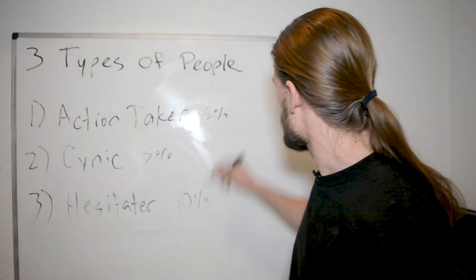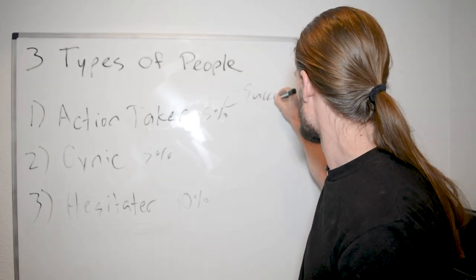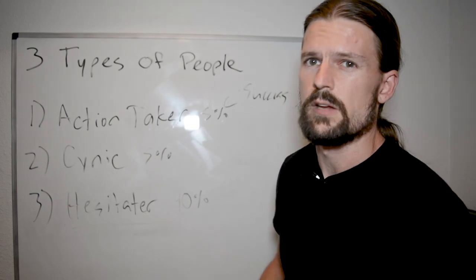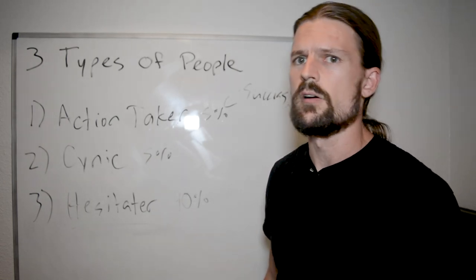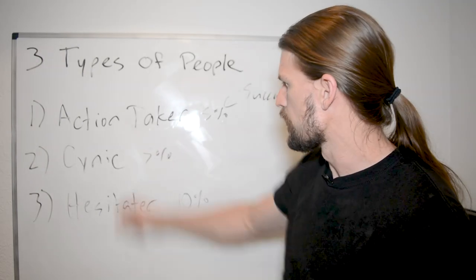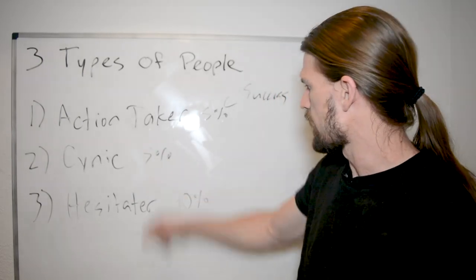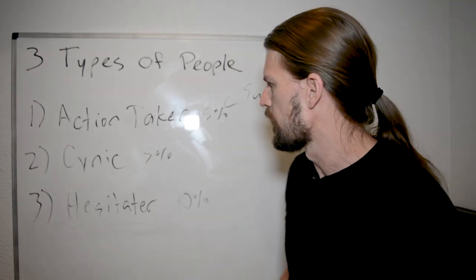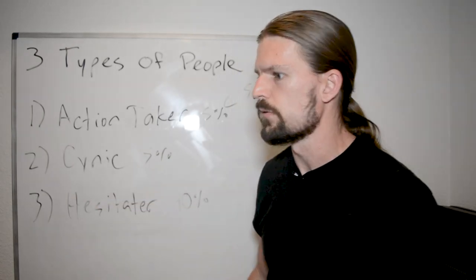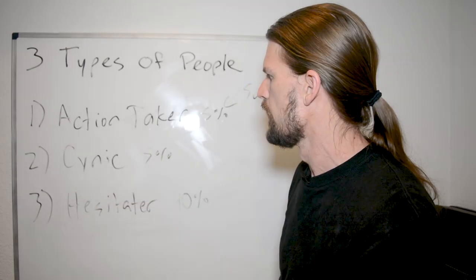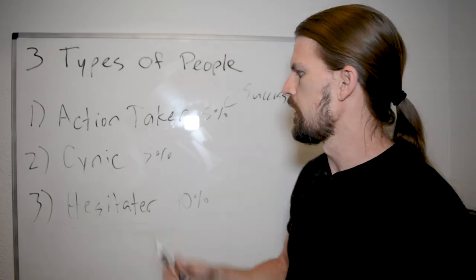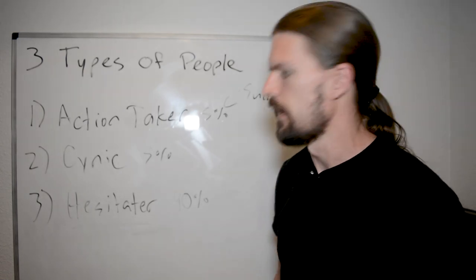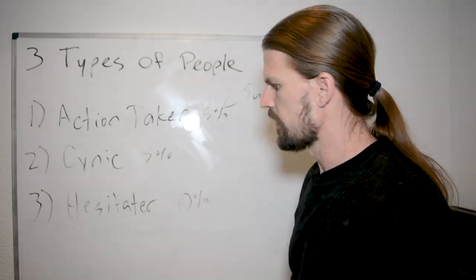So, as you can probably guess, all of the success goes here. The action takers take all of the success in life. All of the successful businesses, all of the people making moves in their career, these are the people who are the action takers. The cynic gets nothing. I mean, they scare away anybody who even wants to talk to them. Nobody wants to talk to the cynic. He's just a downer, and so they end up in the very worst situation, and then the average Joe ends up here. Hesitator. This is the way to mediocrity.